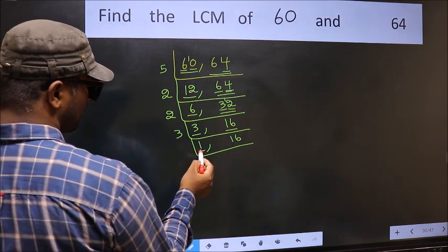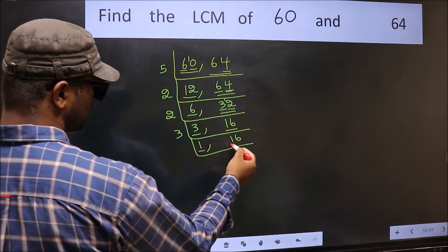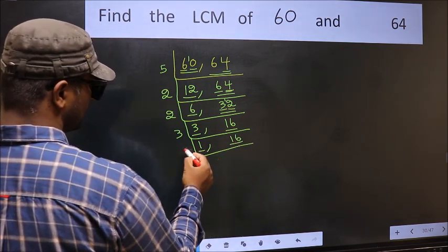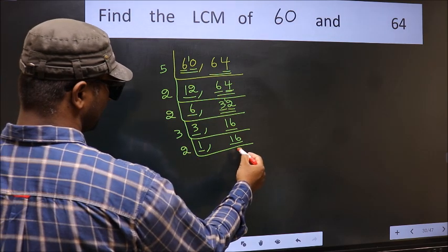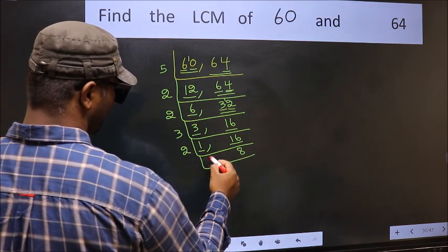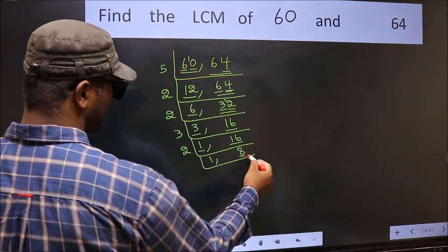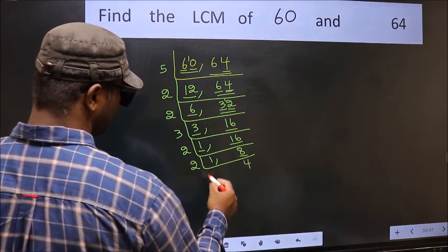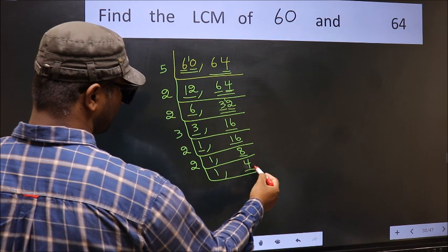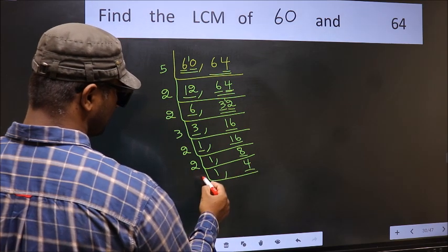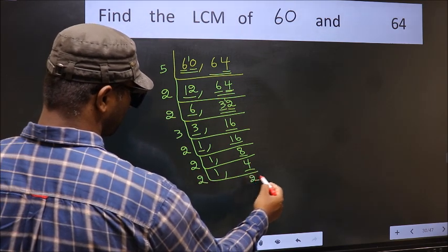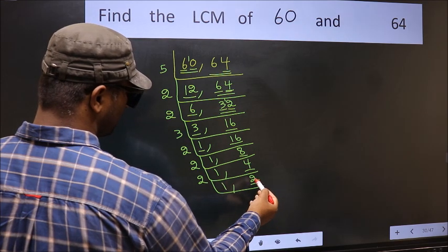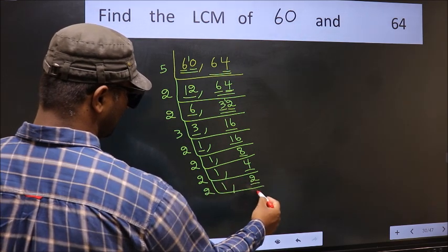Now we got 1 here, so focus on the other number, 16. 16 divided by 2: 2 eights are 16. Now we have 8. 8 divided by 2: 2 fours are 8. Now we have 4. 4 divided by 2: 2 twos are 4. Now we have 2. 2 is a prime number, so 2 ones are 2.